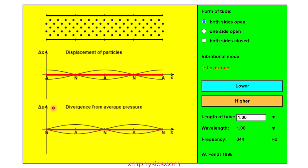Remember, this graph is showing relative pressure compared to atmospheric pressure — it's not showing absolute pressure. So if the graph is zero, it means atmospheric pressure.